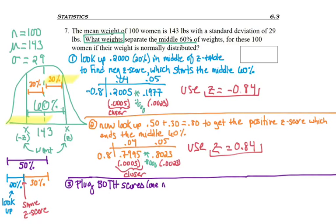Step 3 is I want to plug both of those scores, but one at a time, obviously, into the data conversion formula of x equals mu plus z-sigma, right? We just took the z-score formula, solved for x, and plugged in what we have.